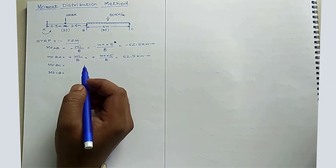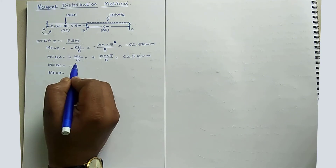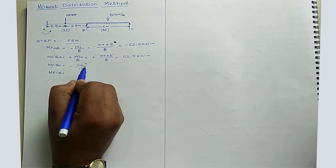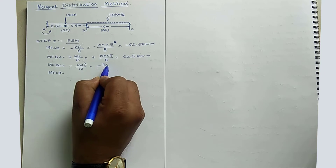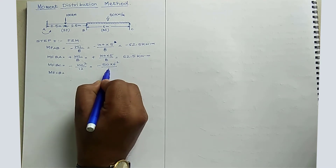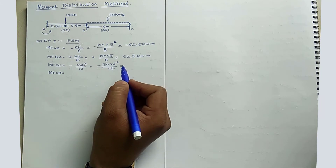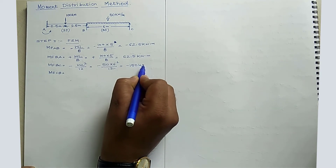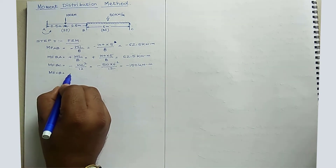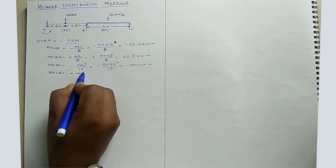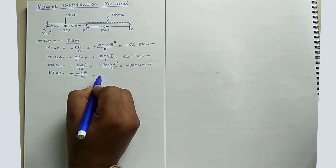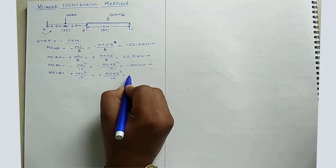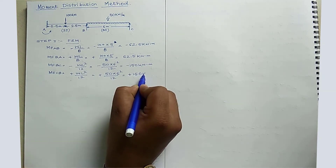For fixed-end moment BC, the span BC is subjected to UDL, so the fixed-end moment BC is −WL²/12 = −50 × 6² / 12 = −150 kNm. Fixed-end moment CB is +WL²/12 = +50 × 6² / 12 = +150 kNm.